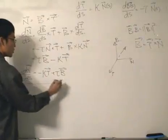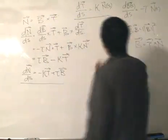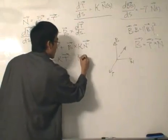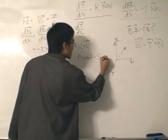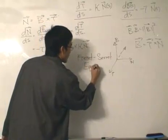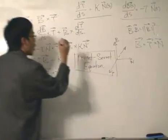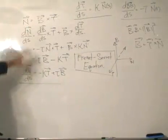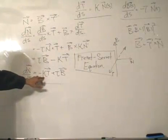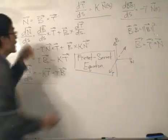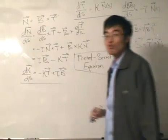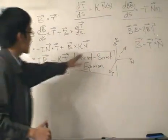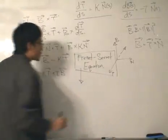These three equations — the first derivatives of the unit tangent, the unit normal, and the unit binormal — are called the Frenet-Serret equations. They are simply the three equations whose first derivatives give us expressions involving kappa (the curvature) and torsion. I'm sure there are many applications in physics. The good news is that there's another way to write them in matrix form.